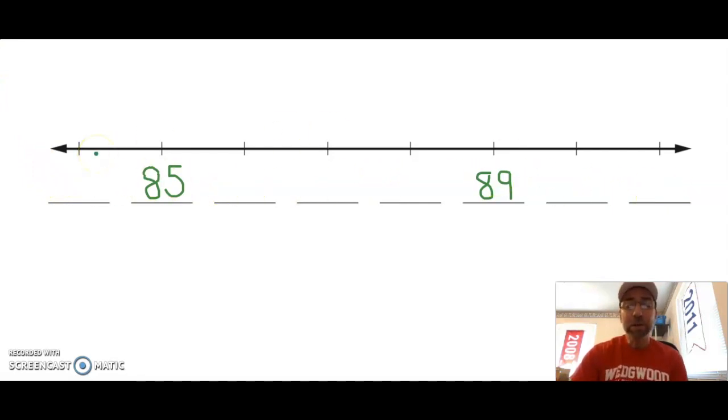You'll notice on this number line we have some tick marks that do not have any names. This tick mark is named 85 and this tick mark is named 89. I always like to start at a tick mark that I have and count up: 85 plus 1, 86, plus 1, 87, plus 1, 88, plus 1, 89 is already there, plus 1, 90, plus 1, 91.